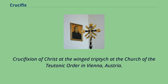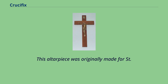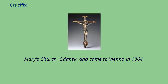Crucifixion of Christ at the Winged Triptych at the Church of the Teutonic Order in Vienna, Austria. Wood carvings by an anonymous master, polychromy by Jan van Waver, Mechelen, signed 1520. This altarpiece was originally made for St. Mary's Church, Gdańsk, and came to Vienna in 1864.